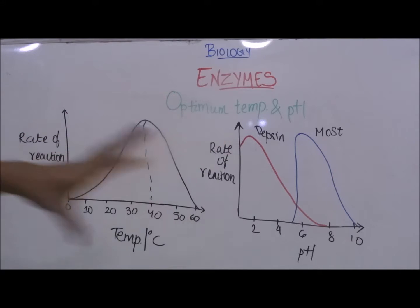Here I have got two graphs. First is rate of reaction on the y-axis with temperature on the x-axis and the second we have rate of reaction on y-axis and pH on x-axis.